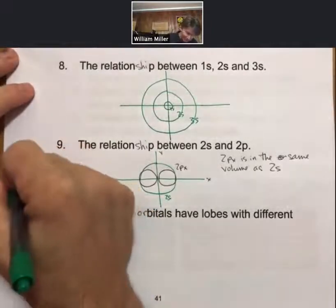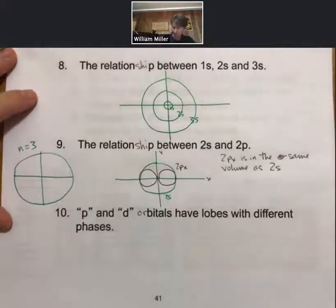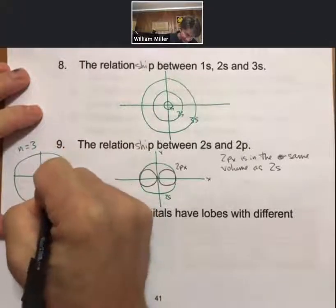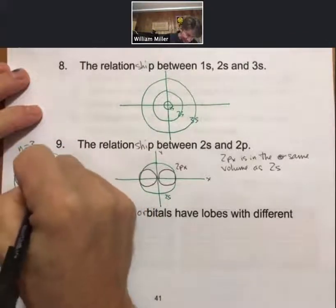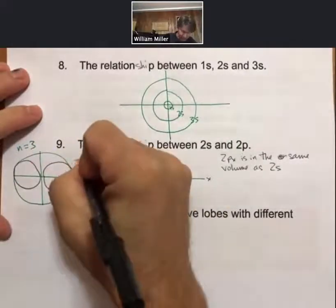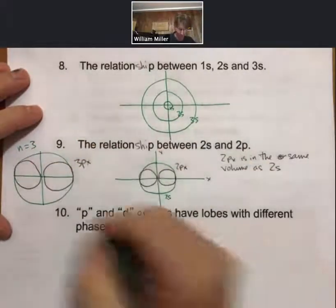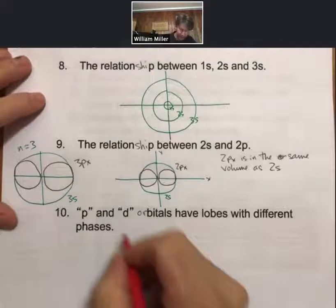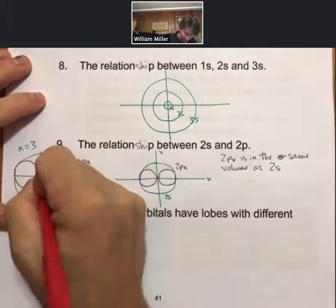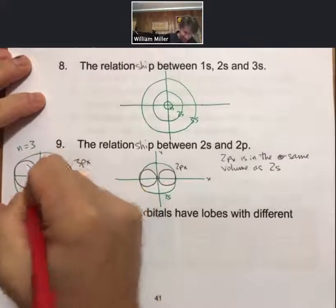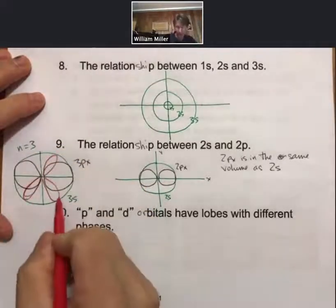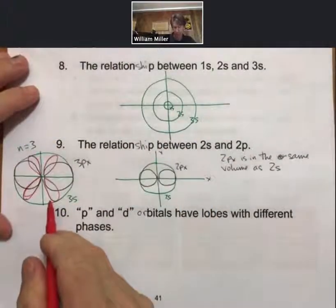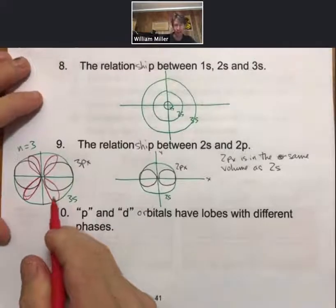So let's say n equals 3 is here, roughly. Then what we might draw is we might draw 3px, so 3px. We have 3s, and then at least drawing one of the 3ds, one of them comes in and has four parts. Again, it should end at the same place as the 3s. And so this one I think is going to be 3dx squared minus y squared.